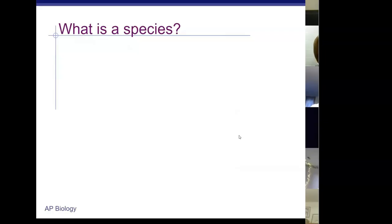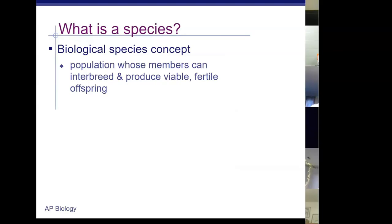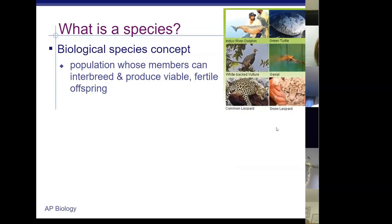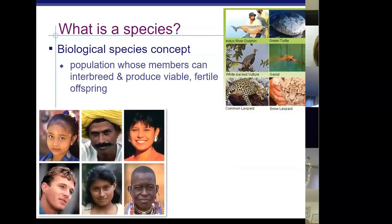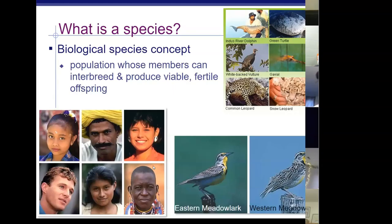Let's go over the origin of species, which is really about how species change. We should know the biological definition of a species: a group of organisms that can breed, reproduce, and produce viable, fertile offspring — offspring that can themselves have other offspring. Here are examples of different species; although there is great variety among individuals, any of them could breed and produce fertile offspring.